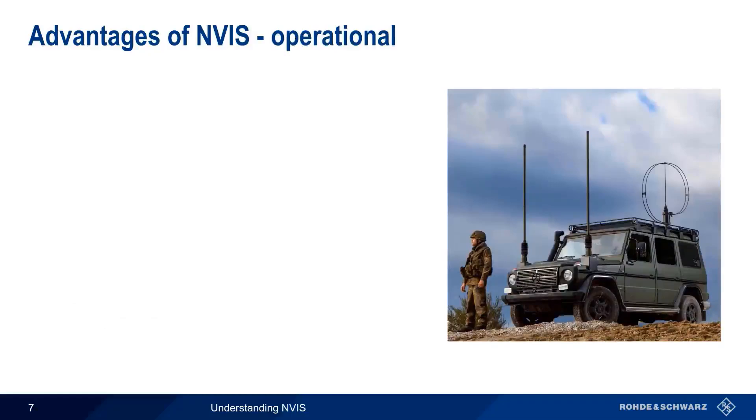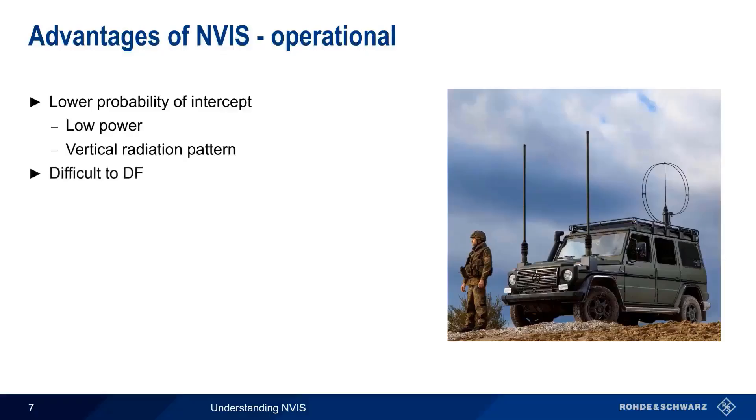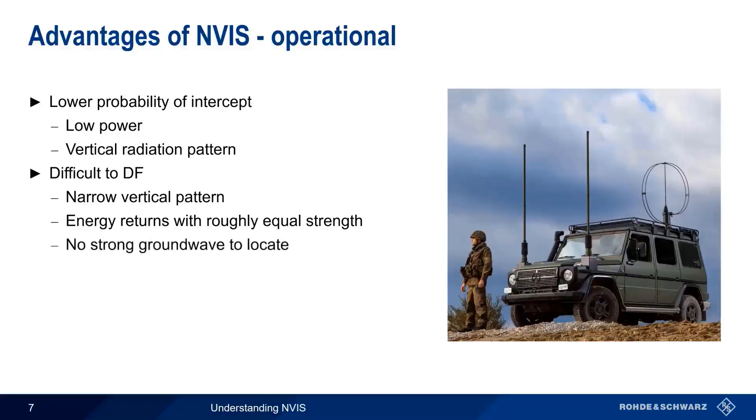In addition to these purely technical benefits, NVIS also provides many operational benefits, particularly in a military environment. NVIS signals generally have a lower probability of intercept than conventional HF SkyWave signals. This lower probability of intercept comes from the fact that NVIS can operate at lower power levels and also from its vertically-oriented radiation pattern. Both of these make it significantly more difficult to DF, or use direction finding, to locate a NVIS station, particularly for ground-based DF stations. Remember that the energy from a NVIS antenna propagates upwards in a narrow pattern and returns from the ionosphere with roughly equal strength over the coverage area. There's no strong ground-wave signal component that can be used for taking a bearing.